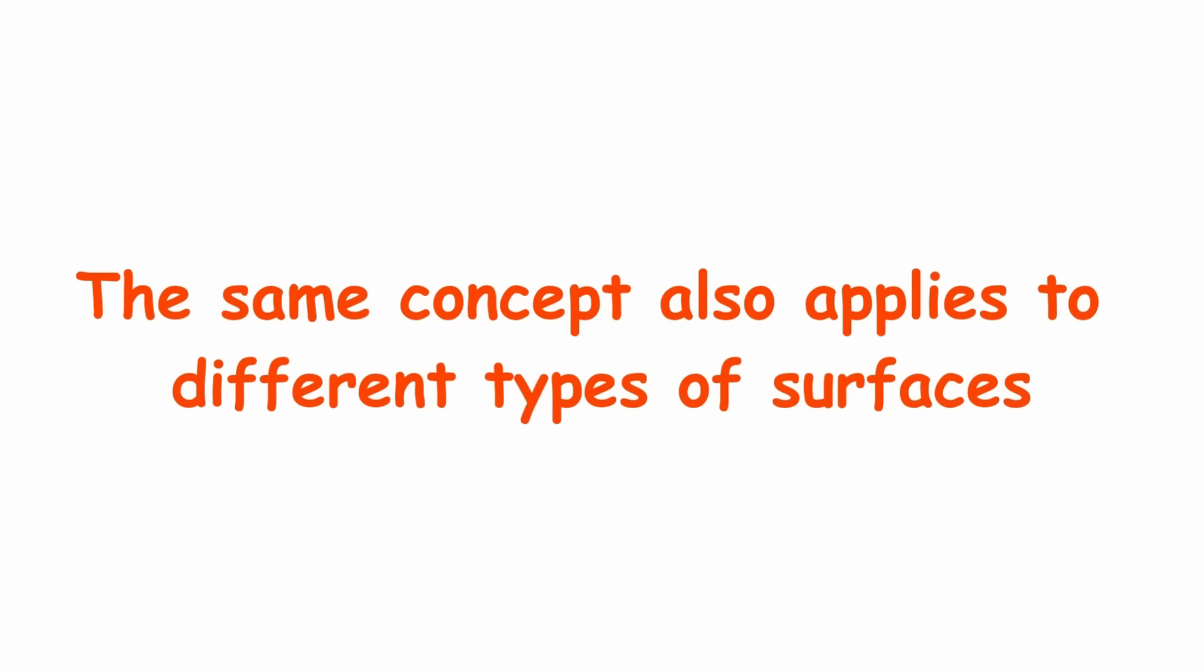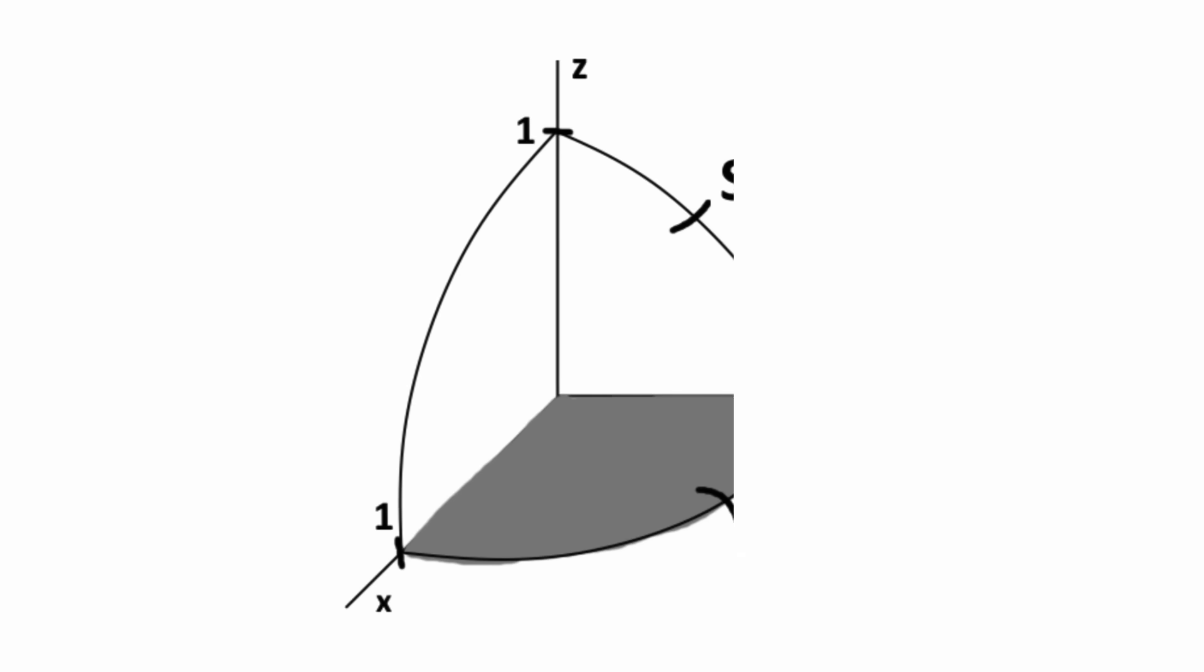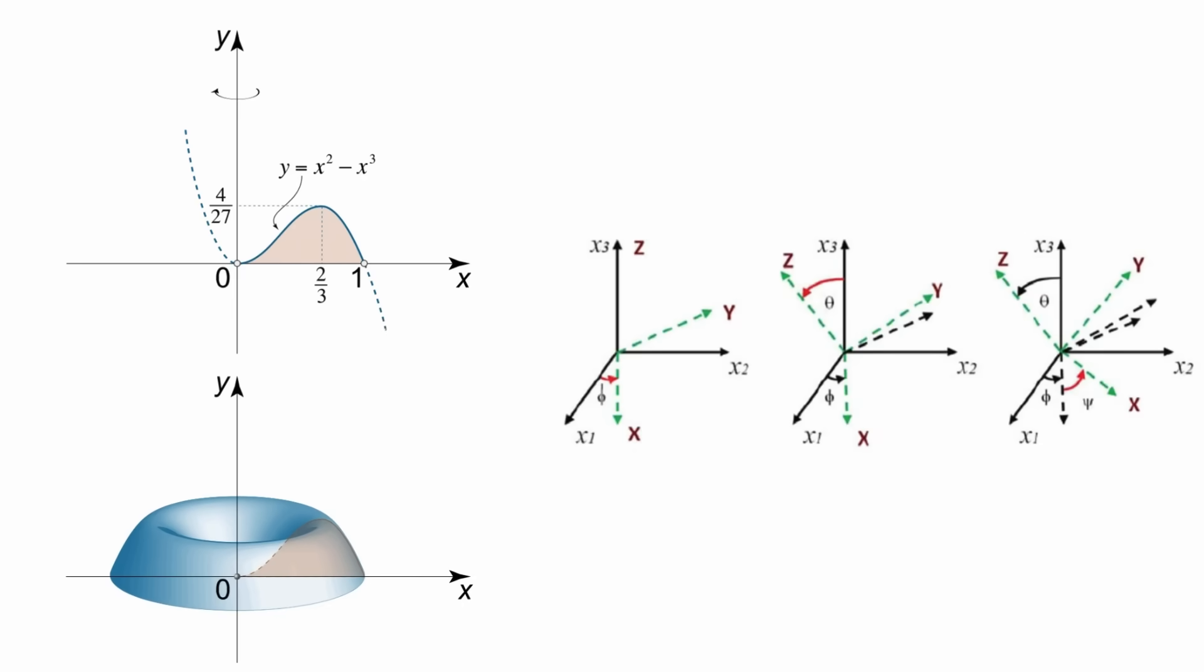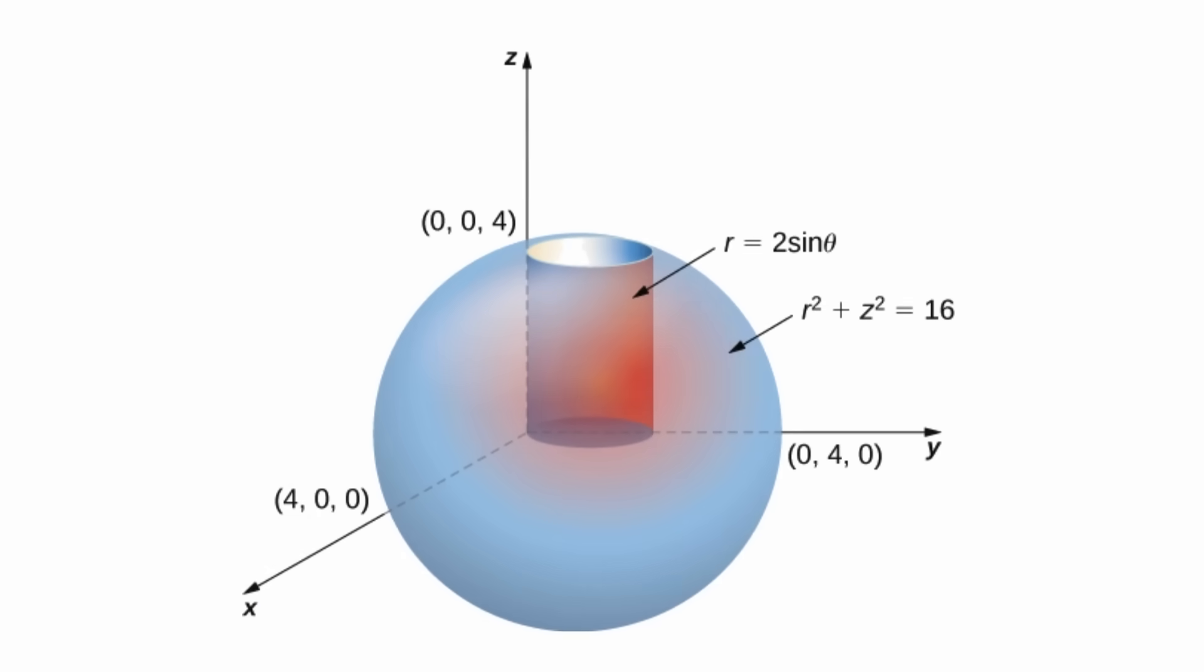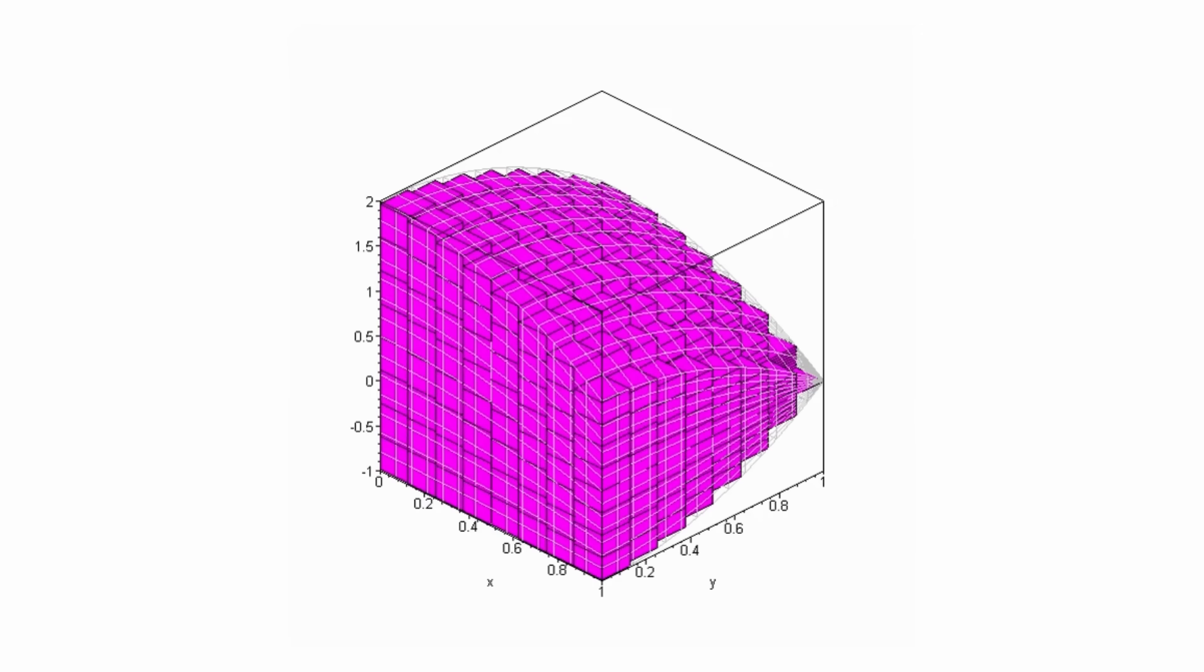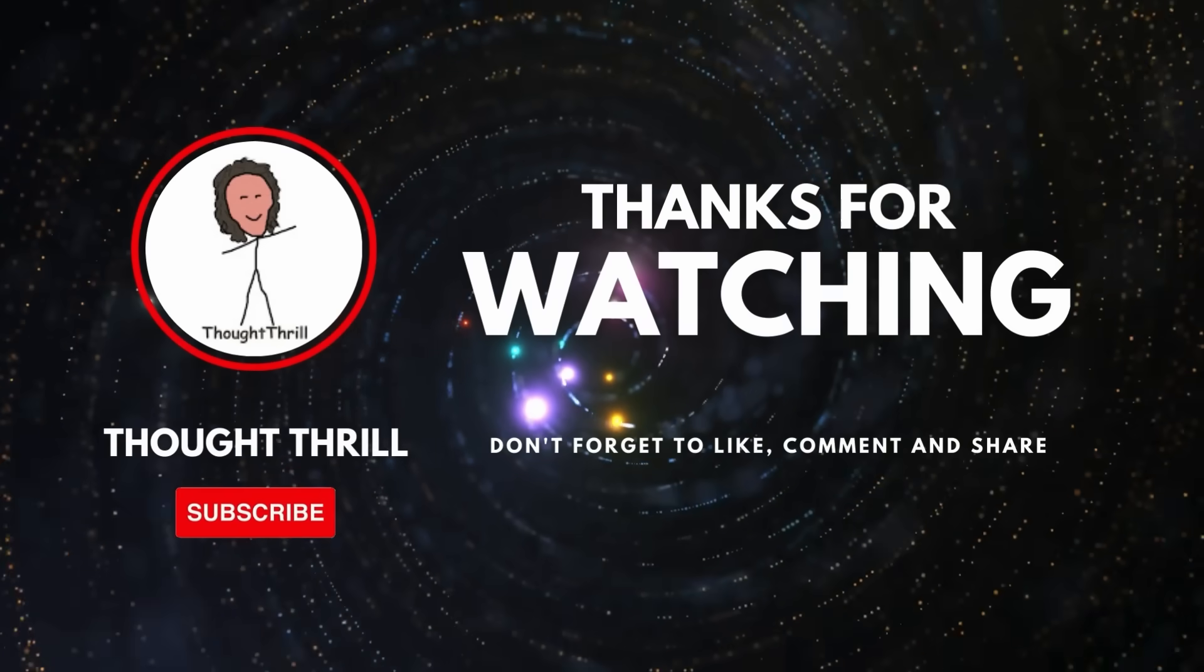The same concept also applies to different types of surfaces. For example, in some applications of multivariable calculus, such as the calculation of volume between solids, it is convenient to change the coordinates, either to cylindrical or spherical, as appropriate. In this way, the solution of triple integrals is facilitated.